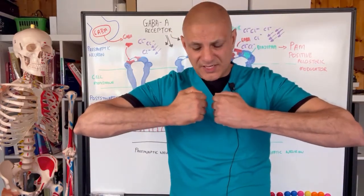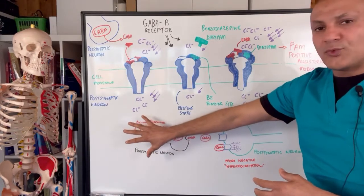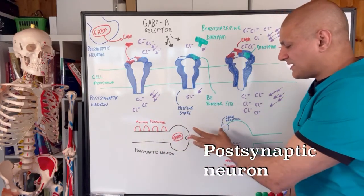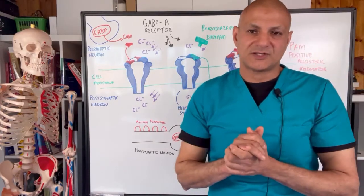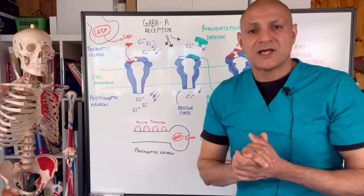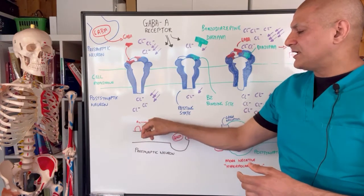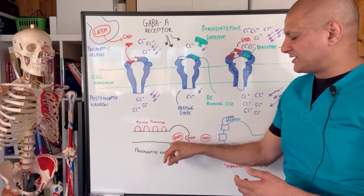When two nerve cells meet, they don't touch — there's a gap between them called a synapse. Let's go to this diagram here. We call this the pre-synaptic neuron, and that's carrying the message which needs to be relayed to the post-synaptic neuron. So a message has to somehow jump across this gap or synapse. There are electric currents that flow along nerves, and these are called action potentials — simply, they're just the flow of ions.